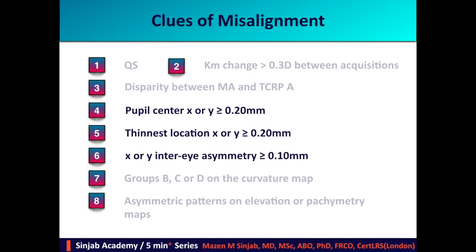We have to study each eye separately. If studying the right eye and I find x or y of the pupil center 0.2 or more, I have to think of misalignment. Another example: if in the left eye x or y of the thinnest location is 0.2 or more, I have to think of misalignment. Now I compare both eyes in terms of x and y for pupil center and thinnest location. For example, if the x coordinate of the pupil center in the right eye is 0.1 while in the left eye it is 0.3, the difference is more than 0.1 — in this case, there is misalignment.